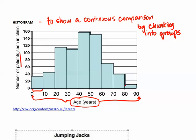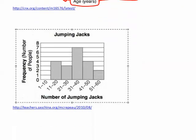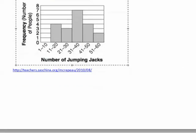We'll be looking at histograms more in grade 8. Here's another example using jumping jacks — the number of jumping jacks a person can complete. Looking at how many people fall within each range, we can see that most people can complete between 31 and 40 jumping jacks. This shows a continuous scale from 1 to 60 and how many people fall under each category.